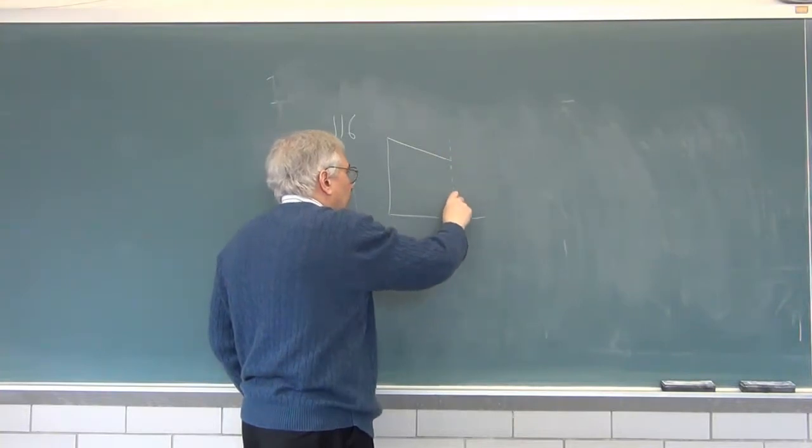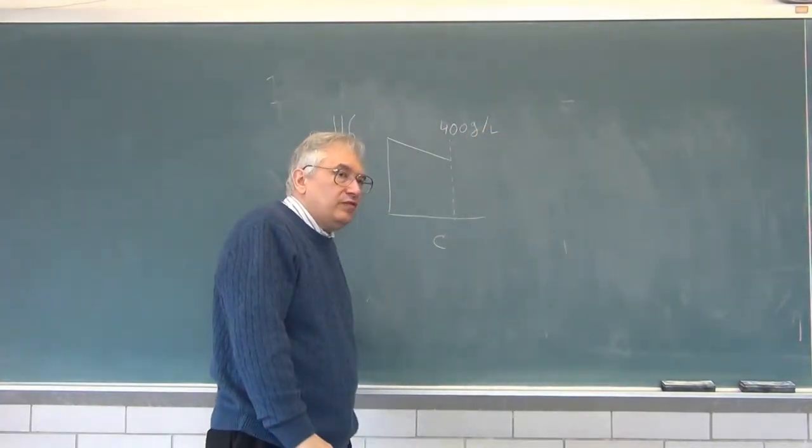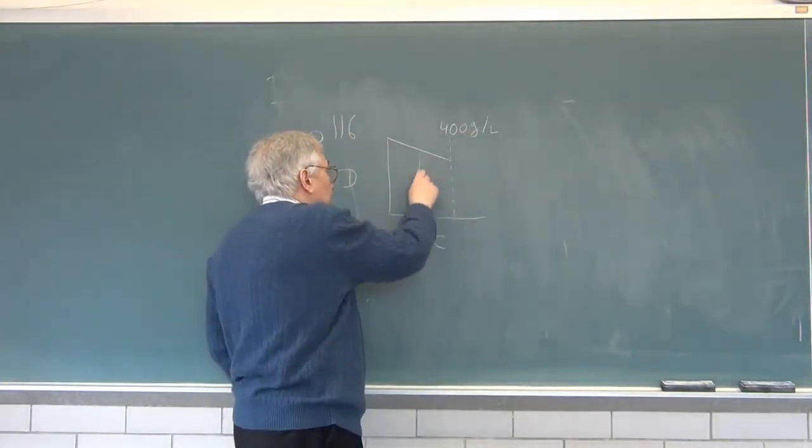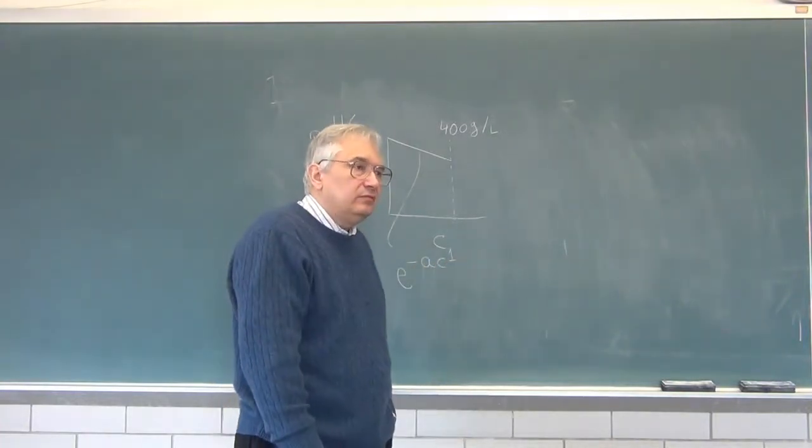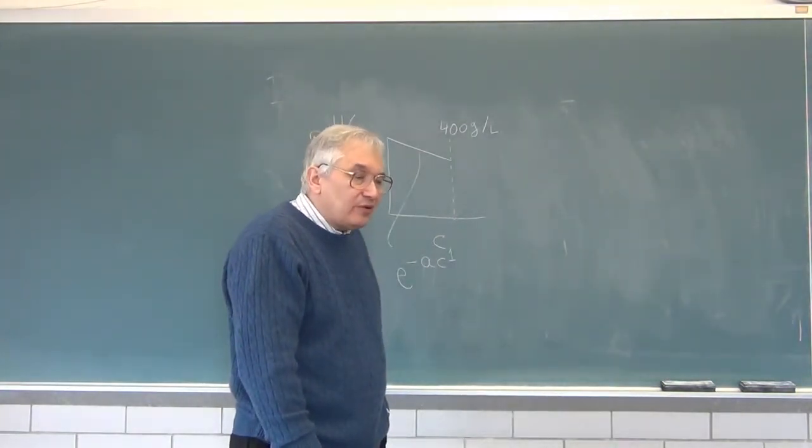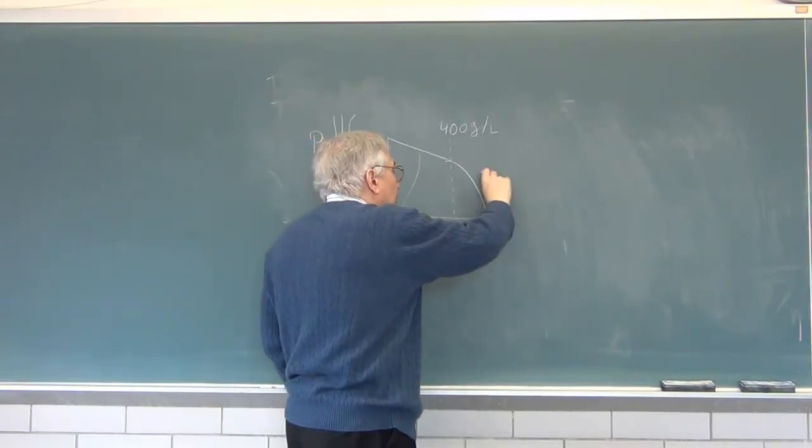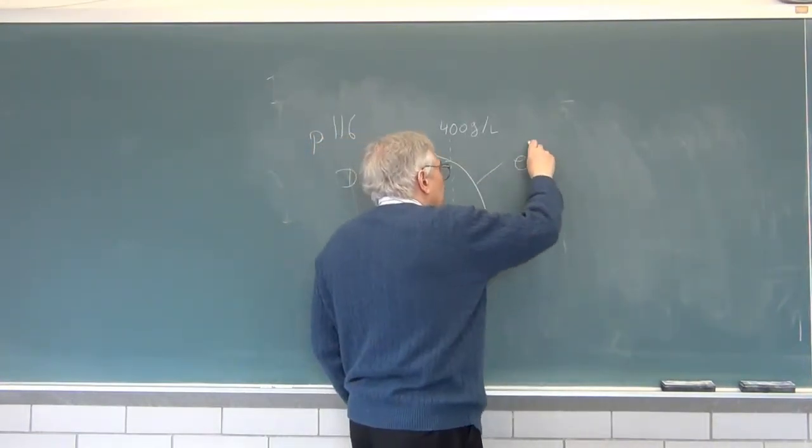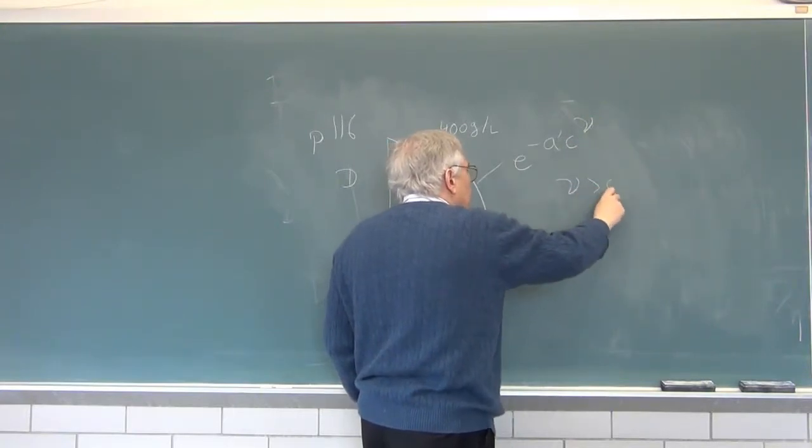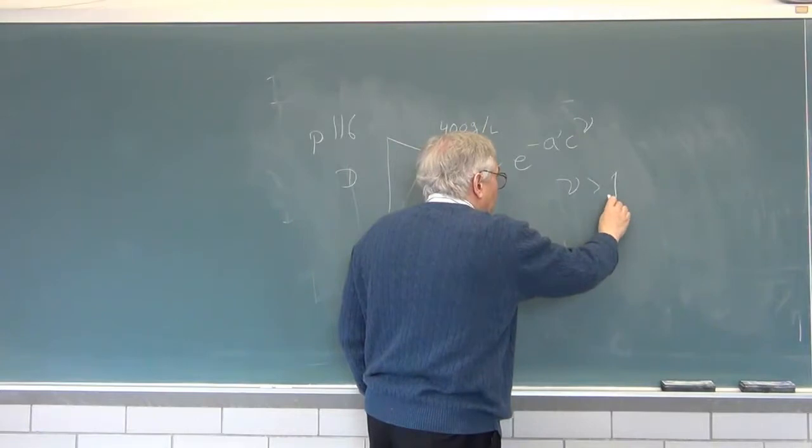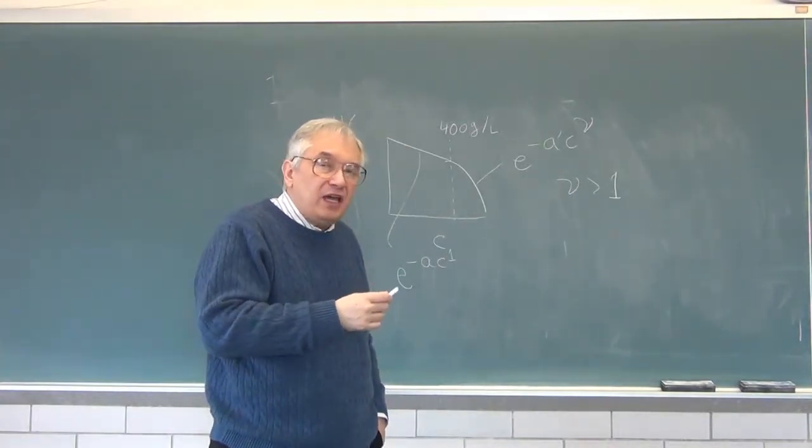And the answer is that out to around 400 gram per liter, there is a decrease in the diffusion coefficient as I add polymer, and this decrease is approximately e to the minus some constant concentration to the first power. And then, at higher concentrations, there is a rollover and the measurements still lie on a smooth curve, but this is a smooth curve e to the minus some other constant a, c to some power nu, and in this case nu is greater than one.